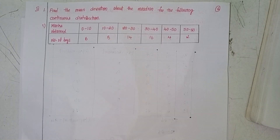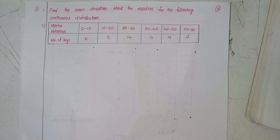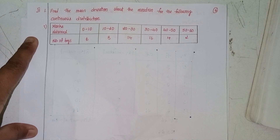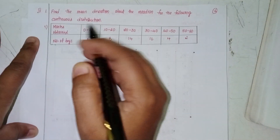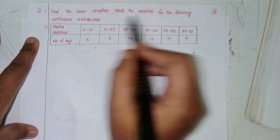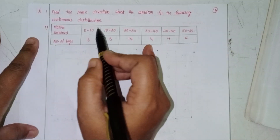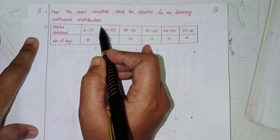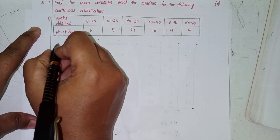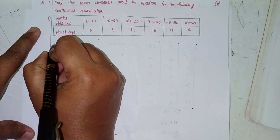Welcome back to our channel. Today we will discuss Intermittent Secondary 2A, Chapter 8, Methods of Dispersions, Exercise 8a. Second problem: find the mean deviation about the mean for the following continuous distributions.